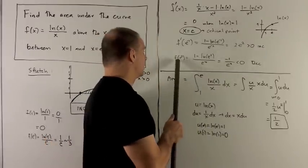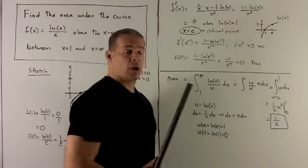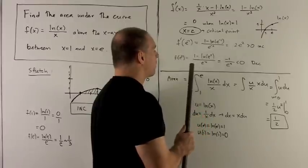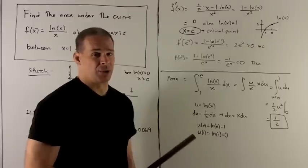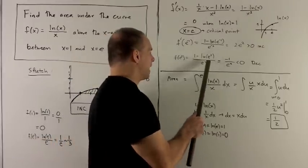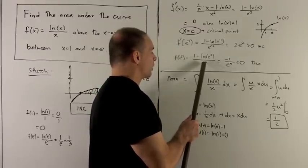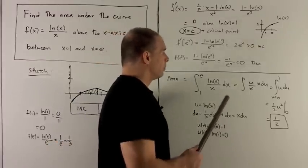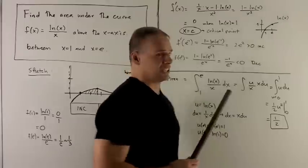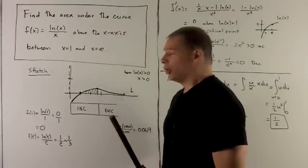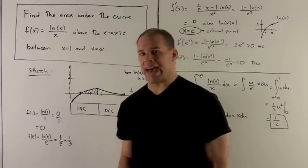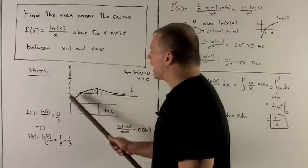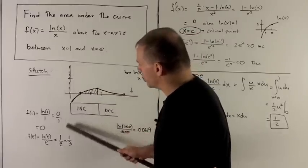For the other side, I'll use x = e², which is roughly 9 — on the other side of e ≈ 2.7. So I have (1 - ln(e²)) / (e²)². The 2 comes down in front; ln(e) = 1, so I get 1 - 2 = -1 in the top. In the bottom I have e⁴ ≈ 81. The real point is this is a negative number, so we're decreasing in this region. We could just connect the dots, but we need to be careful because the vertical asymptote is still there.